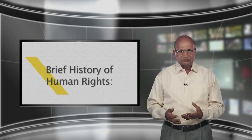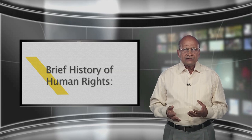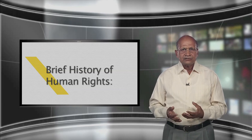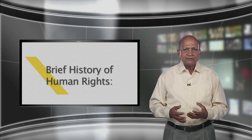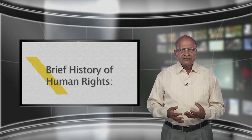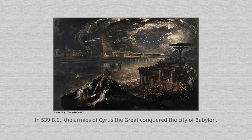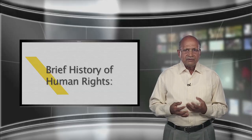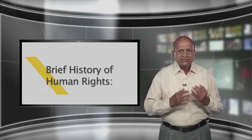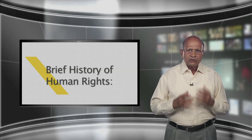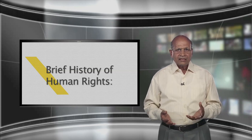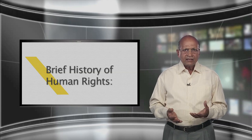Brief History of Human Rights. Human rights are as old as the history of human civilization. Some of the important events which have affected the human rights movement include the Cyrus Cylinder, 539 BC. In 539 BC, the armies of Cyrus the Great conquered the city of Babylon. These were progressive actions that marked a major advance for mankind. The slaves were liberated.